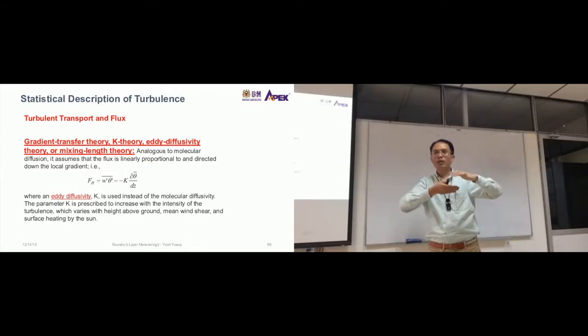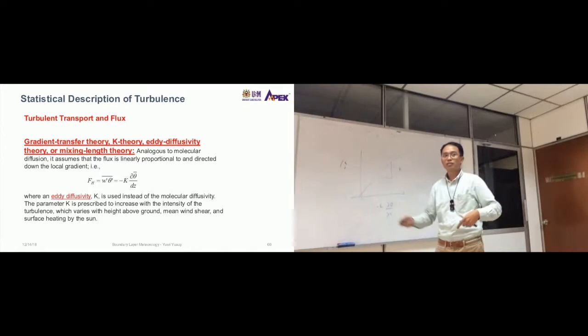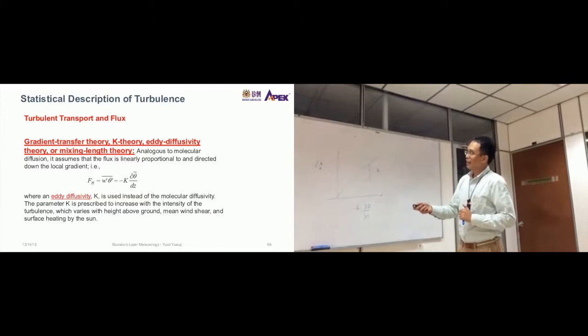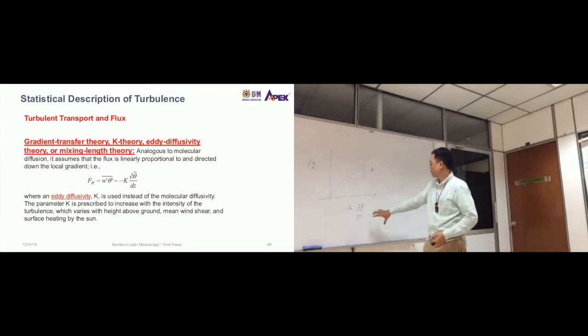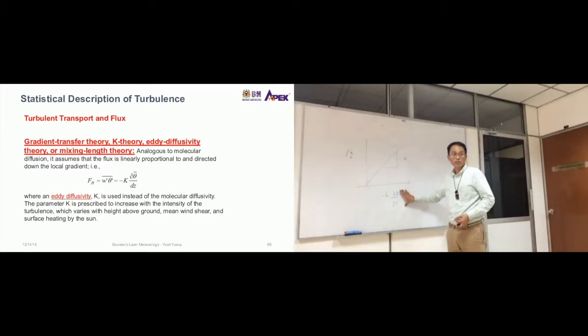What is the constant here? Negative means upward or downward movement, because sometimes it depends on convention. Negative is just to maintain the direction. So this K is the eddy diffusivity term, and it is used instead of molecular diffusivity.